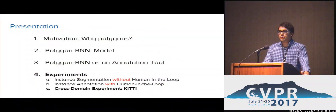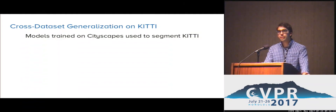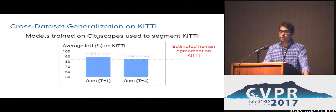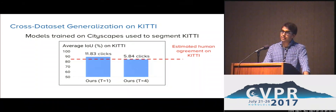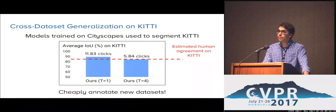Now we are going to test the generalization capabilities of our model. We took the model trained on Cityscape and used it to annotate the instances in the KITTI dataset without any kind of fine-tuning. Our model reached the estimated human agreement on KITTI by requiring less than six clicks on average to annotate the instances. Polygon RNN can be used to cheaply annotate new datasets.